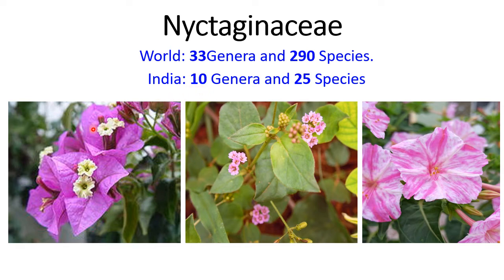In these pictures, you will see some of the representatives of family Nyctaginaceae. This is Bougainvillea, this is Boerhavia, and this is Mirabilis — that is the 4 o'clock plant. These are some members belonging to family Nyctaginaceae, and these plants are very common and widely distributed in the regions of Maharashtra.